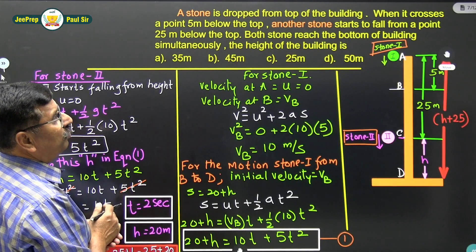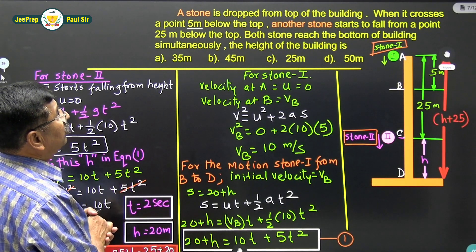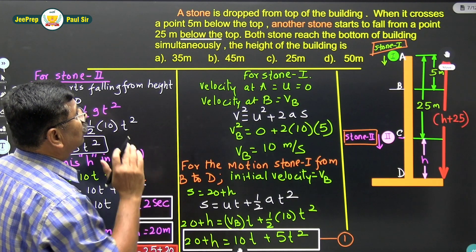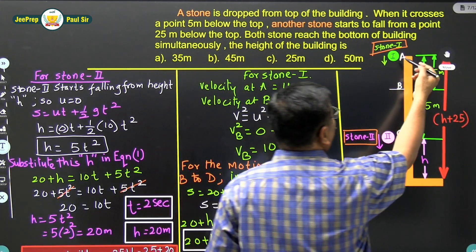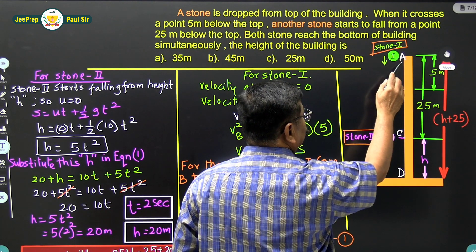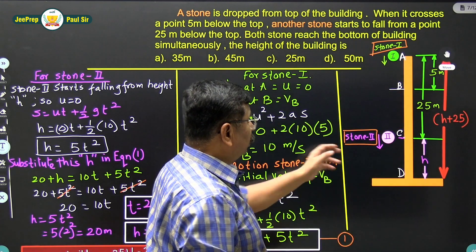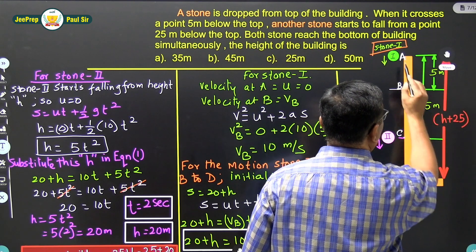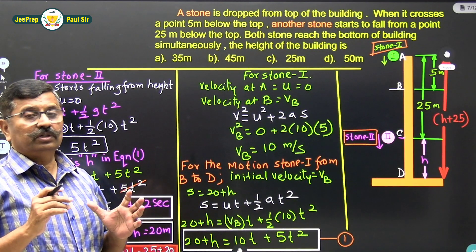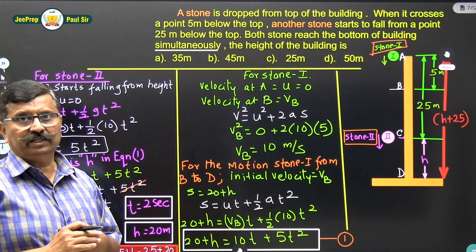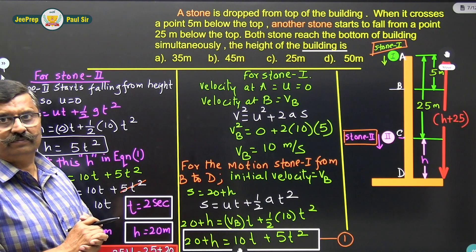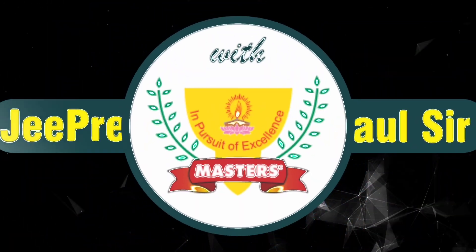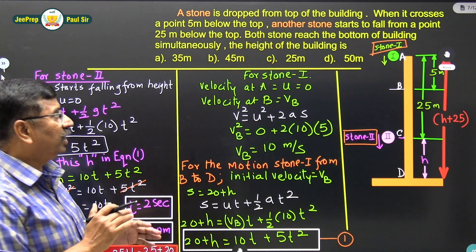Point A is the top of the building. When the first stone crosses a point 5 meters below the top — that is point B — another stone starts to fall from point C, which is 25 meters below the top. Both stones reach the bottom of the building simultaneously, and we have to calculate the height of the building.